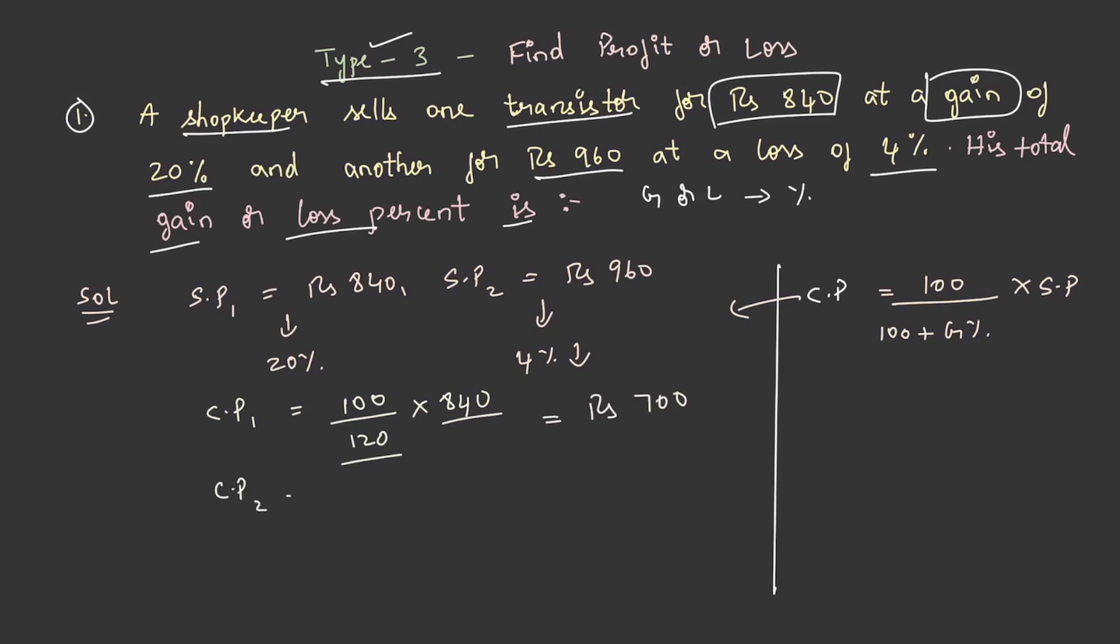Now, the cost price of second transistor is 100 by 96 into 960 and the selling price in the second case is 960 and there has been a 4 percent loss which is equal to rupees 1000.